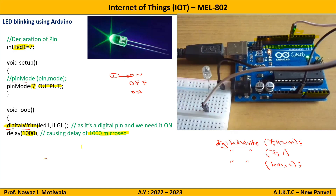Now I need to turn the LED off. As per logic I will write: digitalWrite(LED1, LOW) — because I want to switch off the LED. So instead of HIGH I will write LOW. In this step you can also use any of the four formats: digitalWrite(7, LOW), digitalWrite(7, 0), or digitalWrite(LED1, 0).